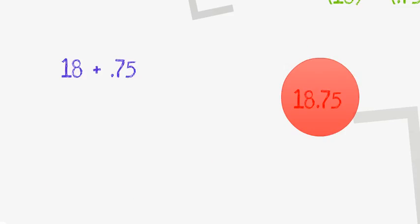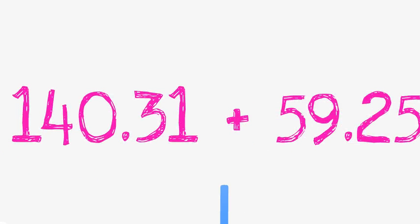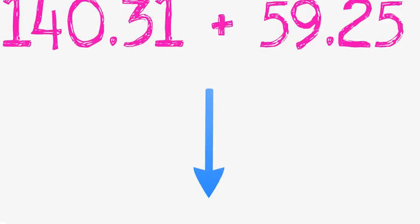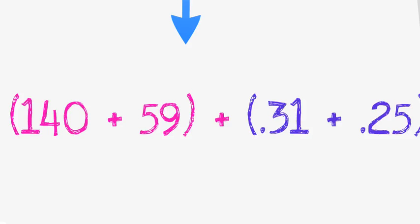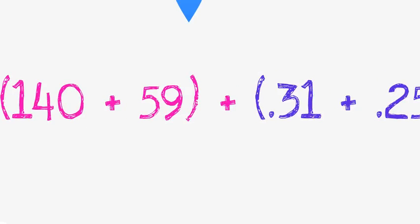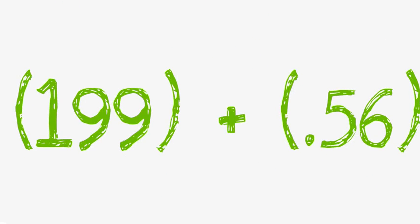Let's have another example. Let's add 140.31 with 59.25. Similarly, we would separate the numbers and the decimals which makes 140 plus 59 and 0.31 plus 0.25. Add the numbers and the decimals separately which gives 199 plus 0.56. Combine them gives you the answer. Let's check out with one more example.